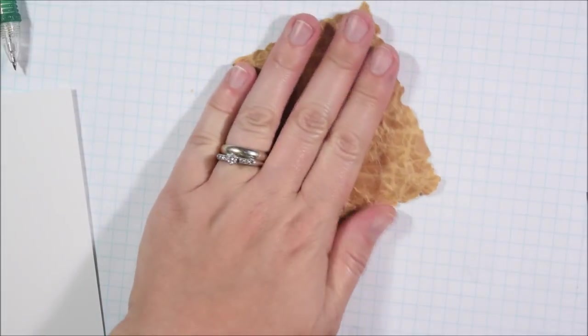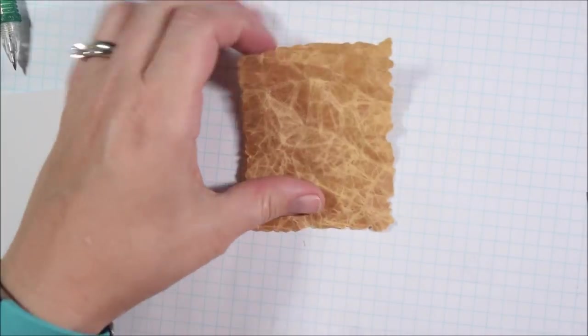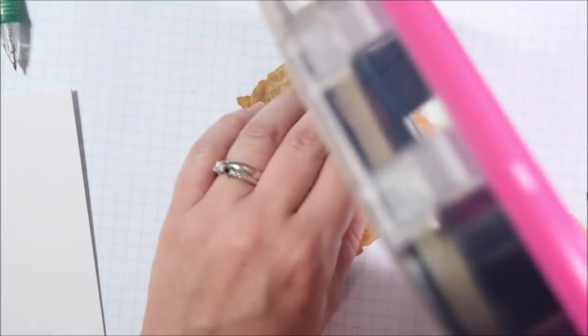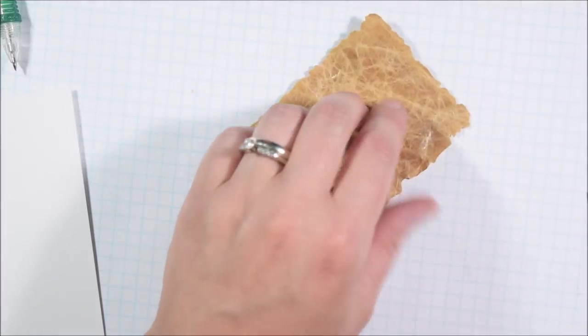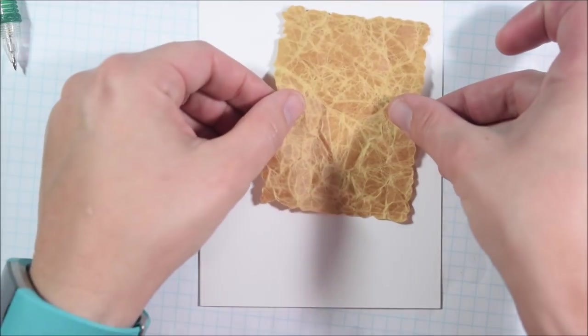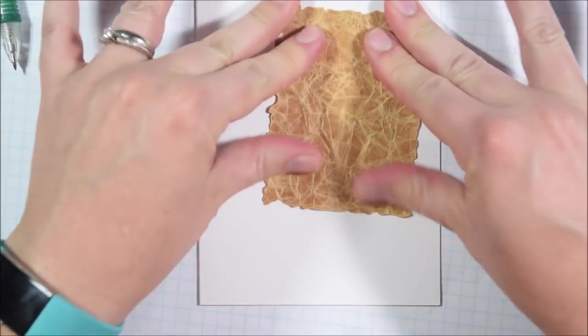I also wanted to spray a little bit of shimmer spray on top of my ocean. What's nice about having worked with Copics in order to create the background versus distress inks is I can layer on something water based like shimmer spray without changing up the ink. So if I really like my background already I can add that layer without changing it at all because distress inks would react with that.